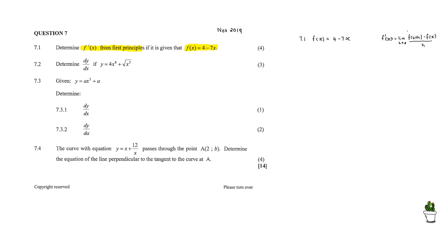We have our f of x function. Our task is to determine f of x plus h. That simply means: go to your original function, and wherever you see an x, substitute x plus h. This gives us f of x plus h equals 4 minus 7 times (x plus h). Distributing the minus 7 into the brackets gives us 4 minus 7x minus 7h. Now we have our two components ready to substitute into the f prime formula.